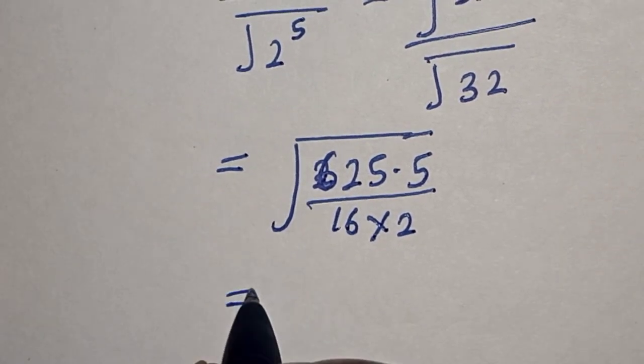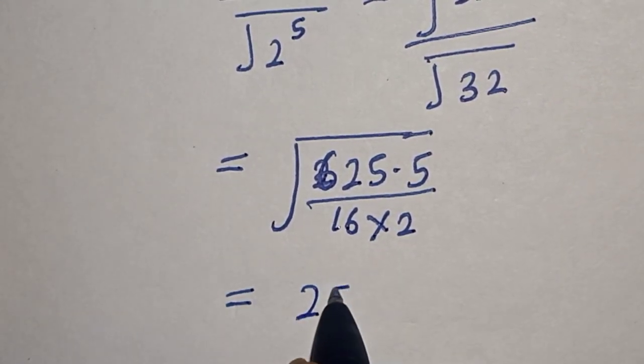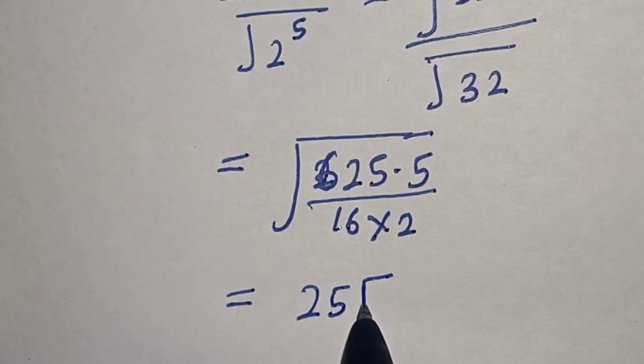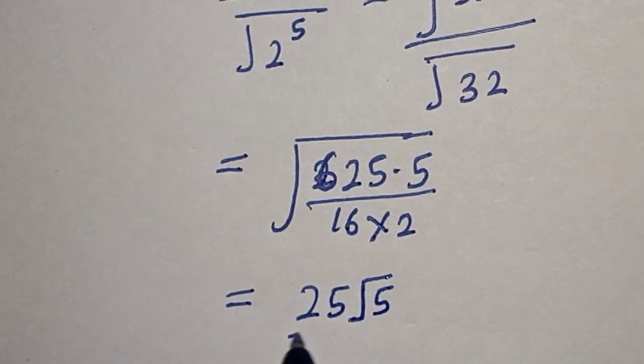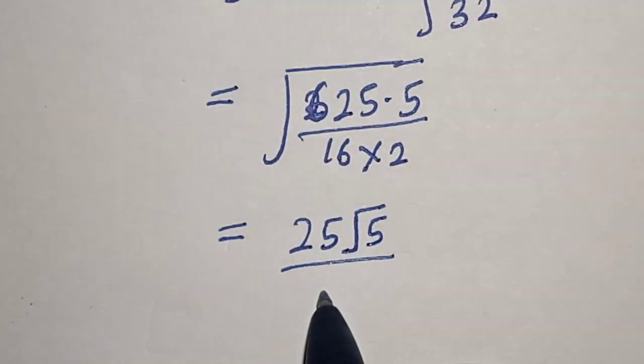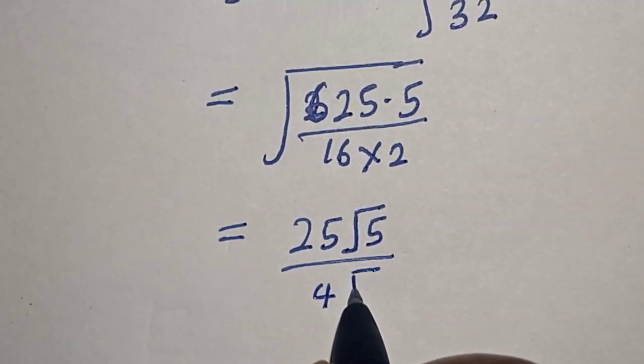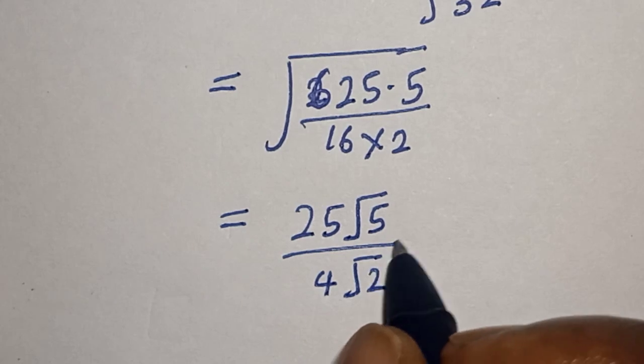Then this equals 25√5 over 4√2. Now let's multiply both sides by √2 over √2.